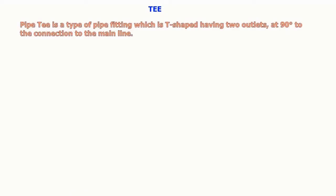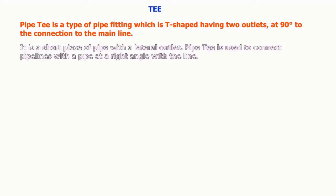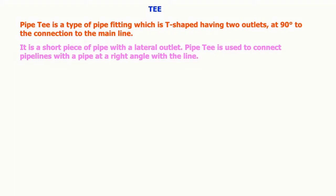Pipe tee is a type of pipe fitting which is T-shaped having two outlets at 90 degrees to the connection to the main line. It is a short piece of pipe with a lateral outlet. Pipe tee is used to connect pipelines with the pipe at a right angle with the line. There are two types of pipe tees: equal tee and unequal tee.